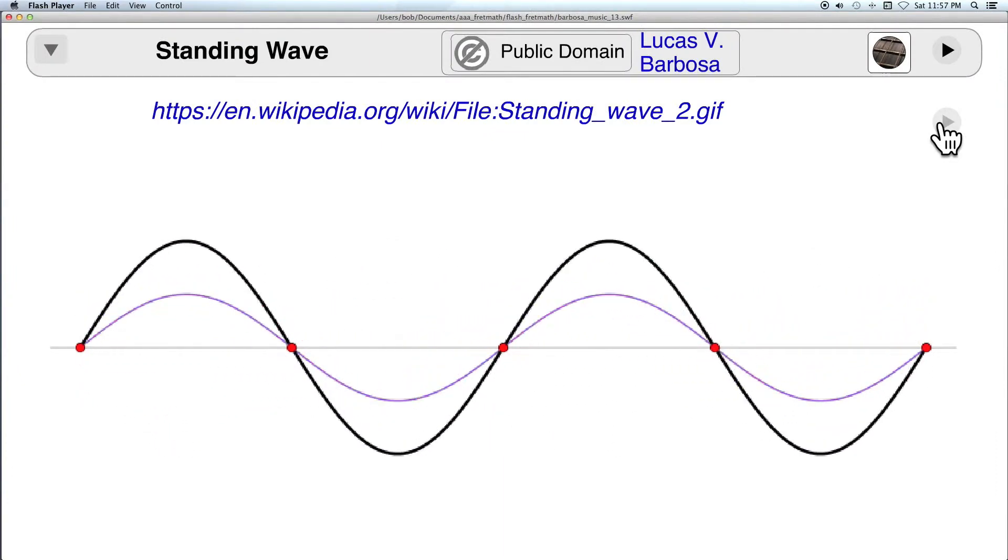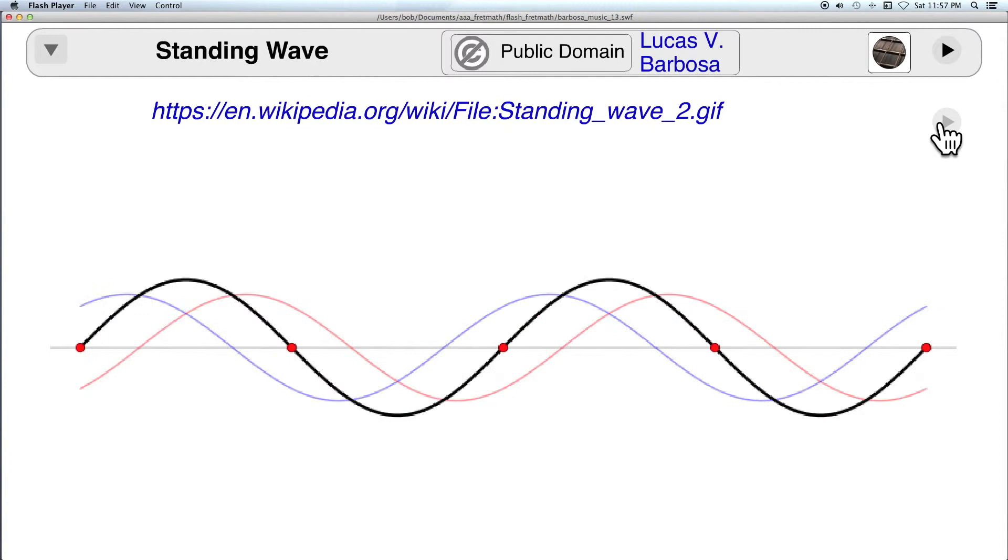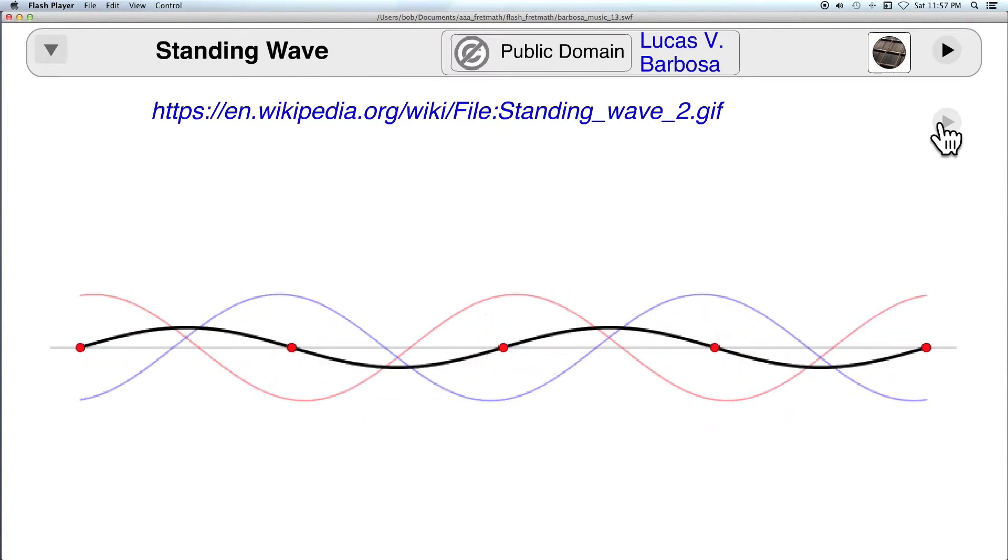Moving on now to standing waves. These are shown to be the sum of two sine waves traveling in opposite directions.